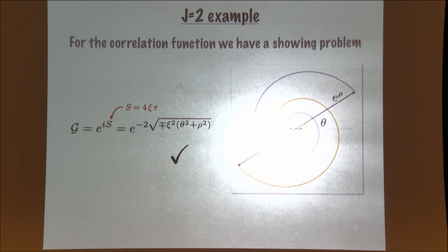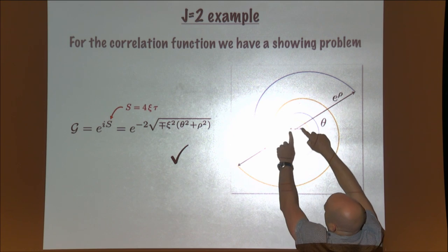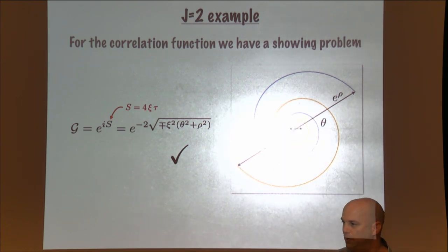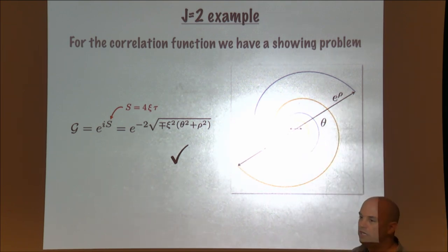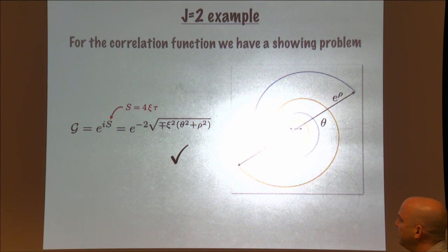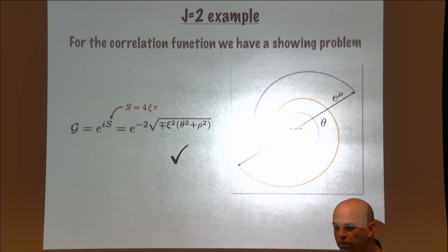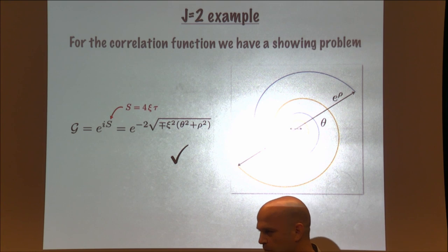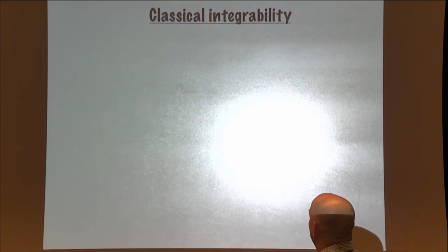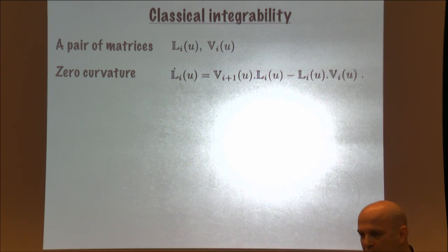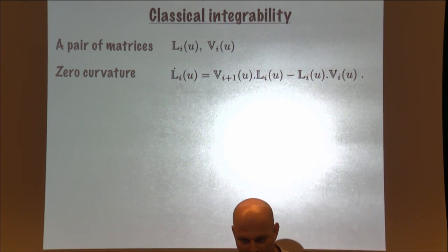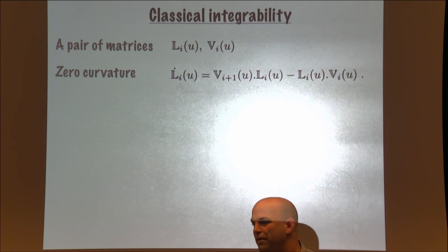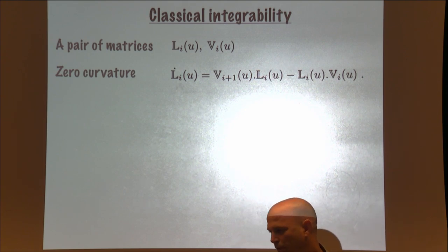Next we compute the four-point function. This is a bit of a shooting problem: you set the two particles at some initial time and some distance, let them circle around, find the time after which the two conformal cross-ratios equal theta and rho, then plug it back into the action. This reproduces the correct four-point function at strong coupling. So this is indeed the classical description that describes the fishnet model at strong coupling, and we see it indeed lives in one higher dimension — the light cone of R^{1,5}.